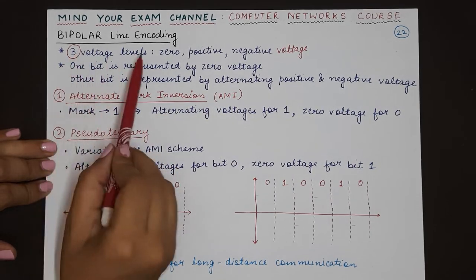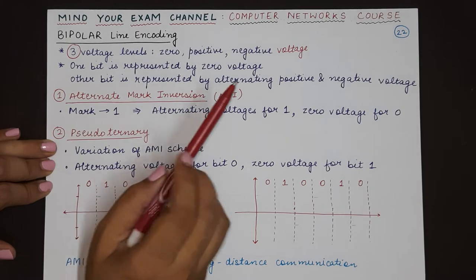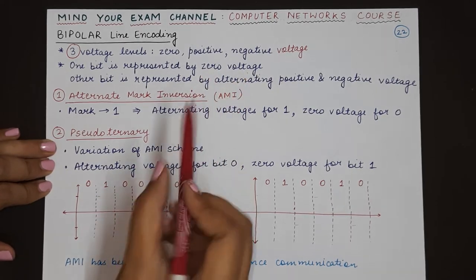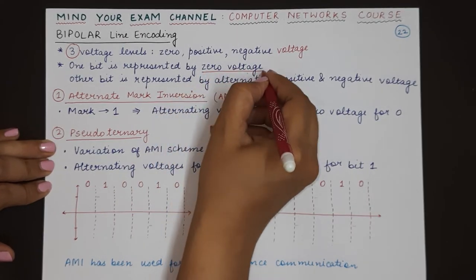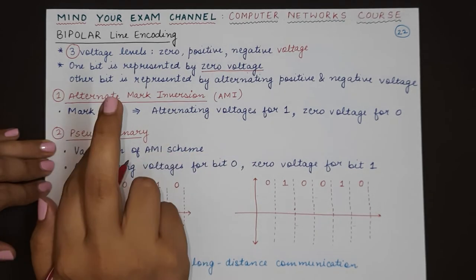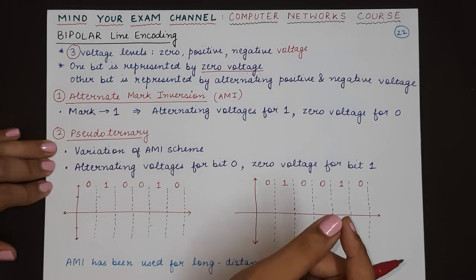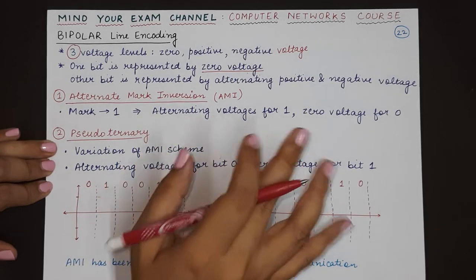In bipolar, one bit will always be represented as zero voltage, and the other bit will always be represented by positive and negative voltage, but alternatingly. If you are encoding one bit as zero voltage always,